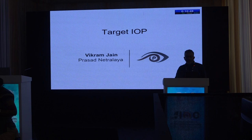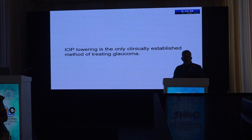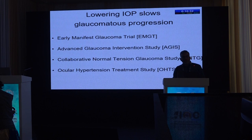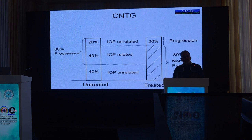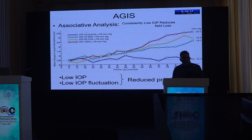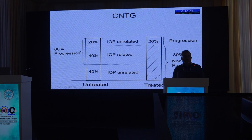What is target IOP and why do we need it? In open-angle glaucomas, IOP lowering is the only modifiable intervention available. We need to know how much to lower IOP. Lowering IOP slows progression — demonstrated by the Early Manifest Glaucoma Trial, the Advanced Glaucoma Intervention Study, and the Normal Tension Glaucoma study. The AGIS showed consistently low IOP reduces field loss. In the NTG study, only 20% of treated patients progressed compared to 60% in untreated patients.